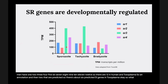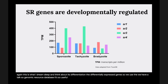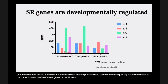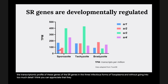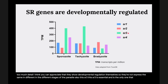We used the ToxoDB genomic resource database — a really useful transcriptomic resource — to look at the transcriptomic profile of the SR genes across the three infectious forms of Toxoplasma. Without going into too much detail, you can appreciate that they show developmental regulation themselves — they're not expressed the same across different stages of the parasite. SR3 is essential and is the only one that has been studied in Toxoplasma.